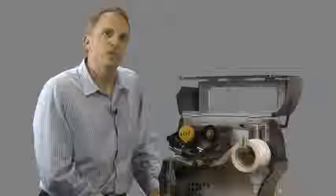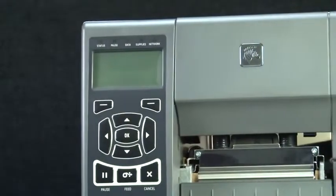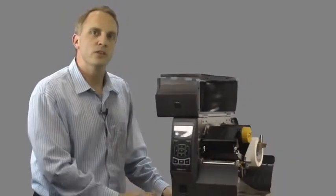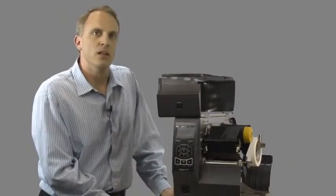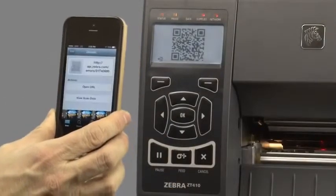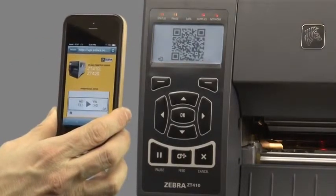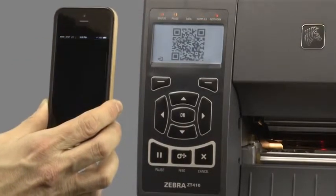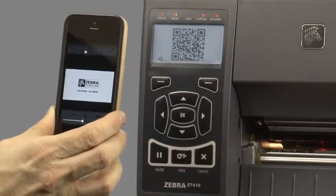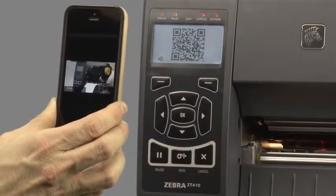The ZT400 boasts a new intuitive user interface, including a sealed keypad for easy cleaning and easy to interpret status indicators. Dynamic QR codes are assigned to the printer error states, which enable the user to access direct web content, including videos and tech support documentation via scanning with a typical QR code application on your smart device.